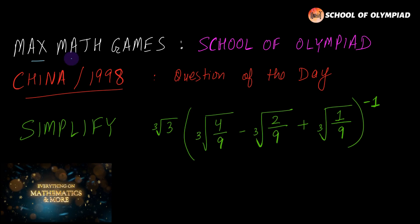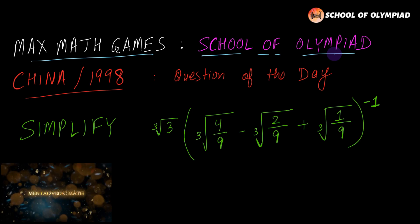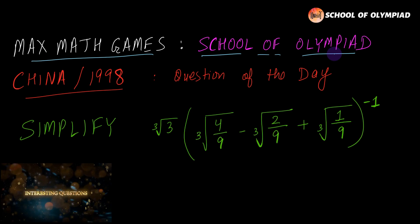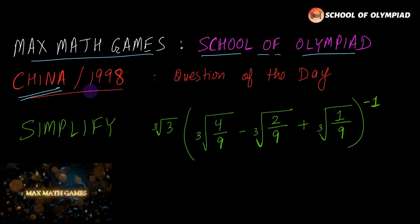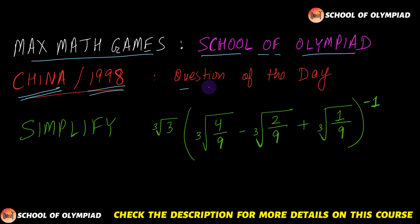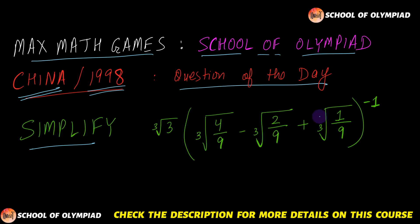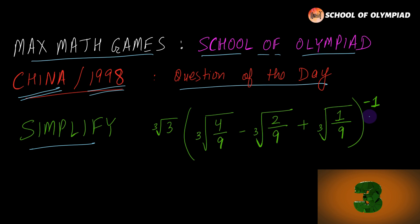Hello guys, welcome to Max Math Games School of Olympiad. In this series we will be covering different questions of Olympiad asked in different countries. Here we have a question asked in China in the year 1998. The question of the day is: simplify the expression — cube root of 3 multiplied by the quantity cube root of 4/9 minus cube root of 2/9 plus cube root of 1/9, whole raised to the power minus 1. Pause the video if you want to give this question a try.